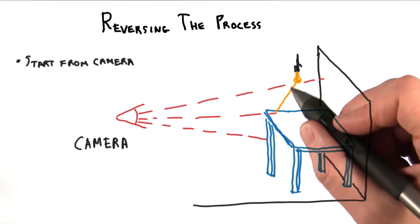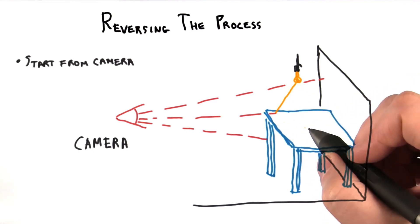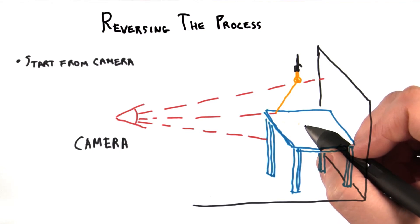One more approximation can be used for these lights. Nothing blocks them. Every surface is considered visible to a light unless it faces away from that light source. In other words, no objects cast shadows. This simplification saves us a lot of computation.